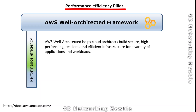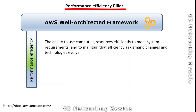This framework provides a set of questions and design principles across six pillars. We are discussing one of those pillars: performance efficiency. The performance efficiency pillar focuses on the ability to use computing resources efficiently to meet system requirements, and to maintain that efficiency as demand changes and technologies evolve.